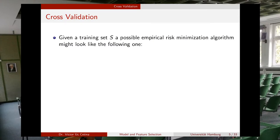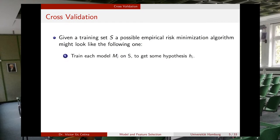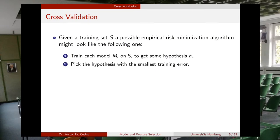Given a training set S, a possible empirical risk minimization algorithm for minimizing the error with this training set might look like the following. First step: train each model M_i on your dataset S to get some hypothesis H_i. Then pick the hypothesis with the smallest training error. At first glance it could look like a good idea, but if you look at this algorithm more carefully, you will see that this is not a good idea. The question is: why is it not a good idea to do it like that?